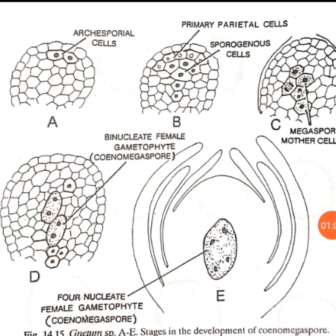In figure B, these cells divide by periclinal division to form outer primary parietal cells and inner primary sporogenous cells. The epidermis as well as the primary parietal cells divide repeatedly to form wall layers in regular rows. The sporogenous cells divide once or twice to form megaspore mother cells — in figure C they are arranged in linear rows of 8 to 16 cells.